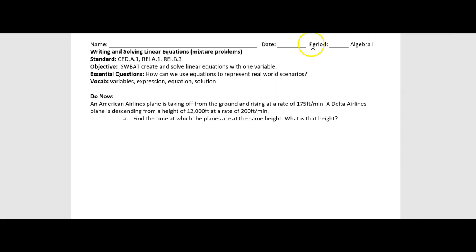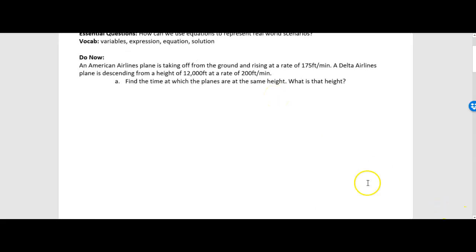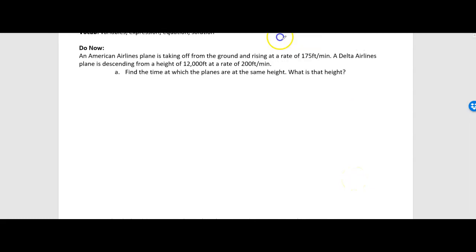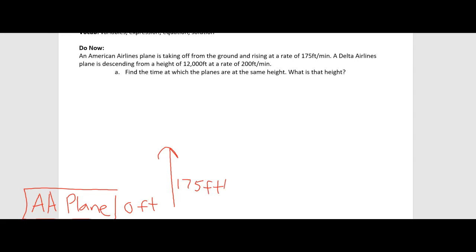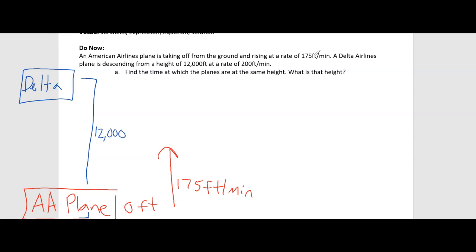Alright, so we're going to draw a little diagram here. I have an American Airlines plane — my planes are not very good so I am just going to say AA plane. That plane starts off at zero feet because it's on the ground, but it is rising at a rate of 175 feet per minute. Meanwhile we have a Delta Airlines plane that is already at a height of 12,000 feet and it's descending at a rate of 200 feet per minute. Our goal is to figure out when the planes are at the same height.